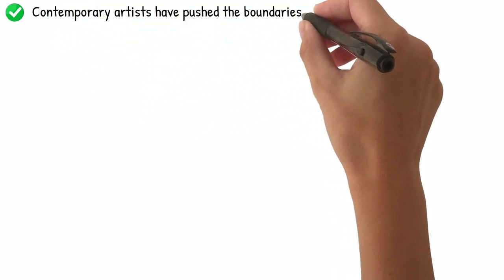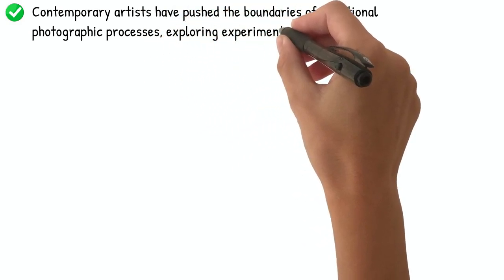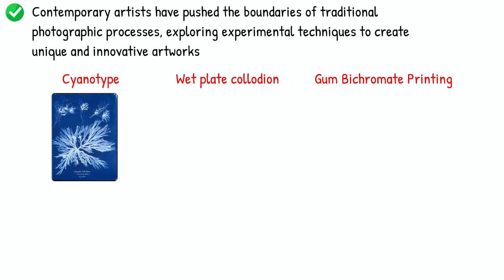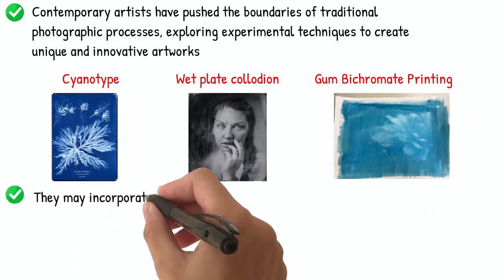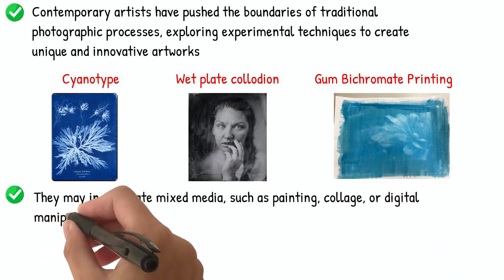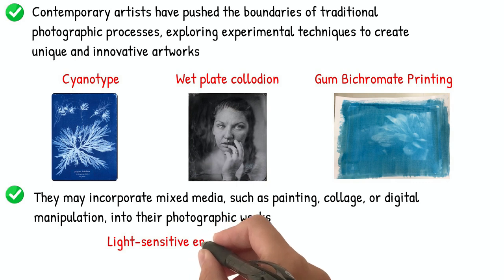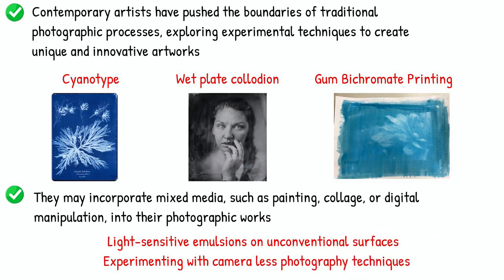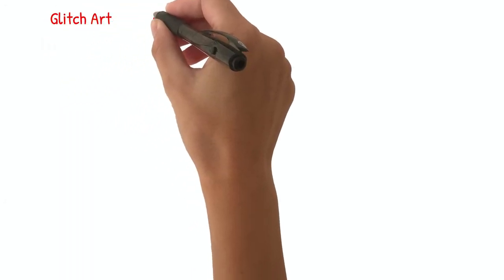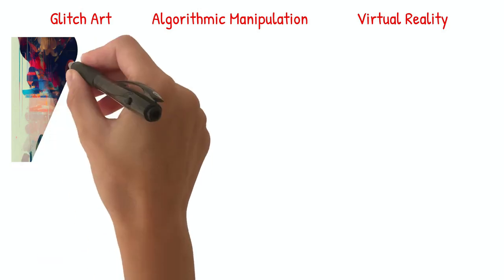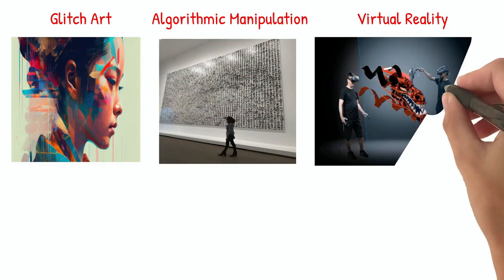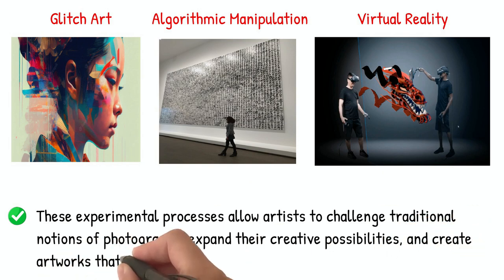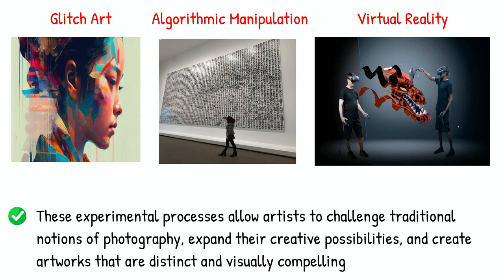Contemporary artists have pushed the boundaries of traditional photographic processes, exploring experimental techniques to create unique and innovative artworks. Some artists experiment with alternative and historical processes like cyanotype, wet-plate collodion, or gum-bichromate printing. They may incorporate mixed media, such as painting, collage, or digital manipulation, into their photographic works. Others explore unconventional materials, like light-sensitive emulsions on unconventional surfaces, or experiment with camera-less photography techniques. Some artists employ innovative digital processes, such as glitch art, algorithmic manipulation, or virtual reality, to create thought-provoking and visually striking images. These experimental processes allow artists to challenge traditional notions of photography, expand their creative possibilities, and create artworks that are distinct and visually compelling.